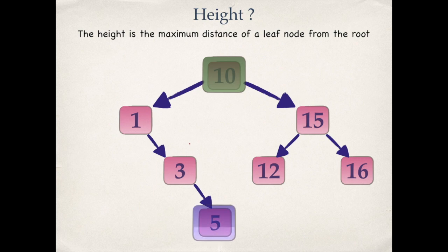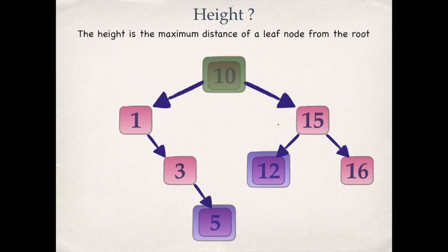For five, there are three edges from the root to the leaf, so the distance is three. For twelve, there are two edges, so the distance is two. For sixteen, there are also two edges, so the distance is two. The maximum value is three, so the height of this tree is three.